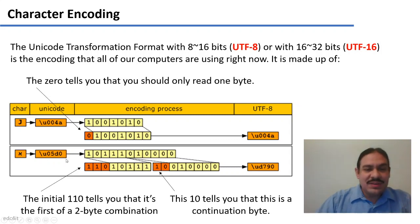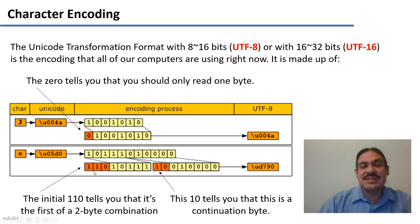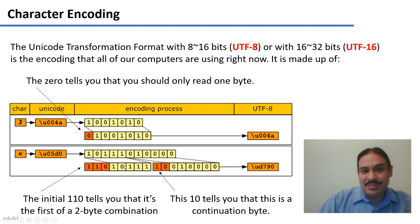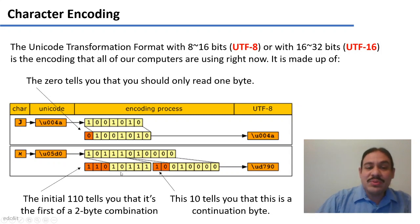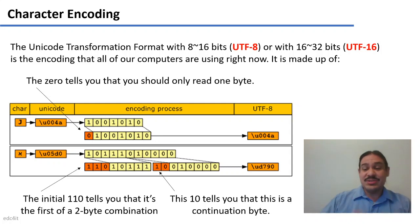For a letter like the Hebrew aleph, you would need two bytes. The first byte has a 1-1-0 prefix telling you this is the first byte in a two-byte combination, and the second byte has a 1-0 prefix telling you it's a continuation byte from the one before. You then have 11 bits of space for representing the actual character. The result is a documentation representation of D790, and two bytes stored in your computer memory. So some letters are represented in one byte, some in two.